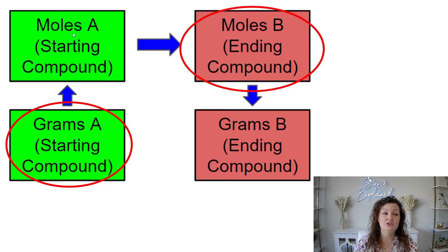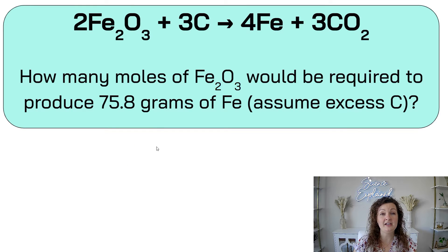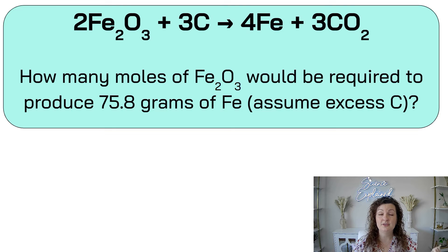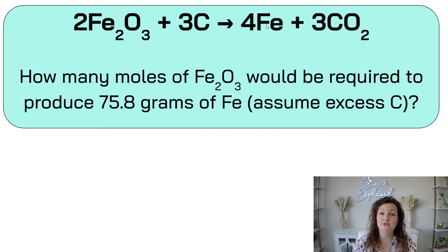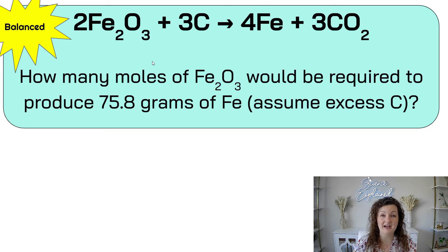We're going to go from grams to moles of the same starting compound or element, and then we're going to end up with moles of the element or compound that we really want. Let's go ahead and take a look at how this works. First up, we have our chemical equation. The very first thing we ask is: is it balanced or is it not balanced? Two times two is four Fe, and we have four Fe over here. Two times three is six oxygen; three times two is six oxygen. And then we have three carbon and three carbon. This is a balanced equation, so now we are ready to look at our question.